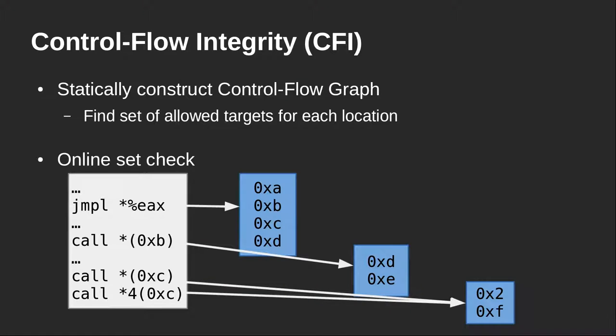The second security principle is control flow integrity. CFI at a concept level tries to ensure that the execution of the program never leaves the statically determined control flow graph. To ensure this security property, we first have to statically construct a control flow graph and for each indirect control flow transfer instruction find the set of allowed targets at compile time. At runtime, we execute an online set check — for each indirect control flow transfer, we check if the target is in the set of possible targets determined at compile time. If it is, we allow it; if not, we terminate the application.